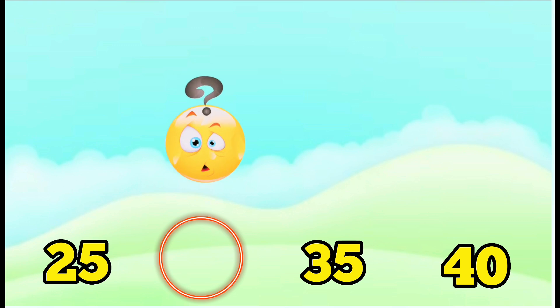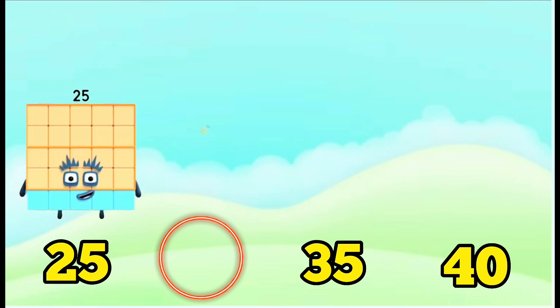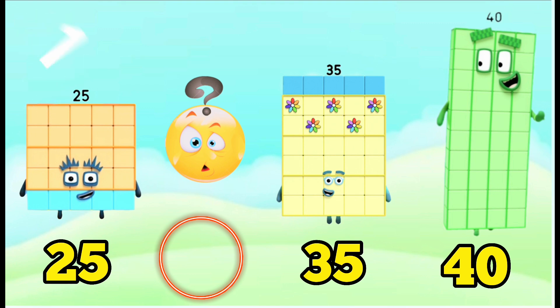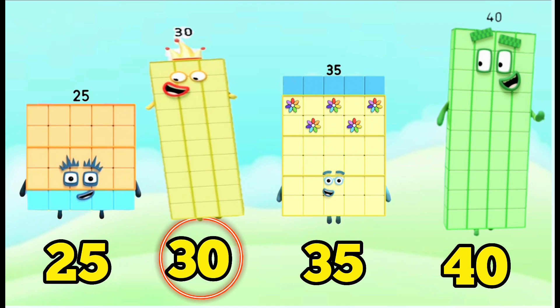Next, can you guess what number is missing? Twenty-five, thirty-five, forty. And the answer is thirty. Let's count: twenty-five, thirty, thirty-five, forty.